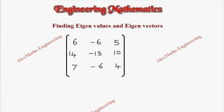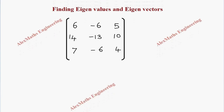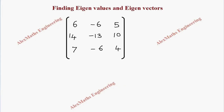Hi students, this is Alex. In this video we are going to find the eigenvalues and eigenvectors of the given matrix of order 3. As a first step, you have to write the characteristic equation, which is nothing but the determinant of A minus lambda I equal to zero.